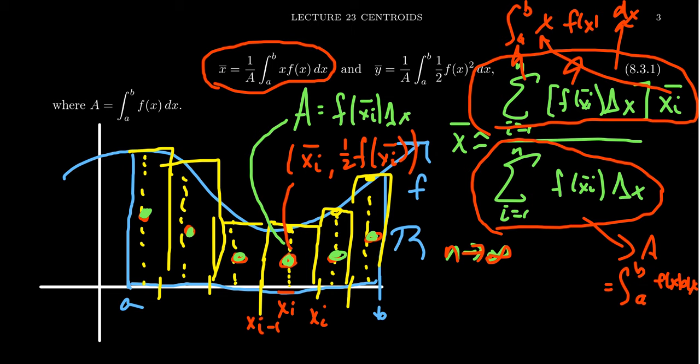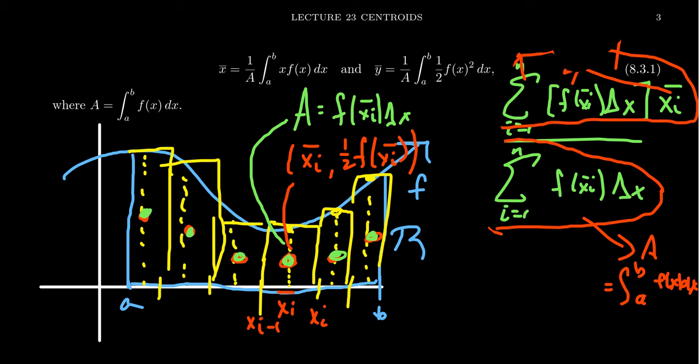We get this x-bar right here. So it's 1 over A, the integral of x f of x dx. Now, the y-bar is a little bit different, and that's because the geometry is a little bit different here. And so let's illustrate what that would look like.